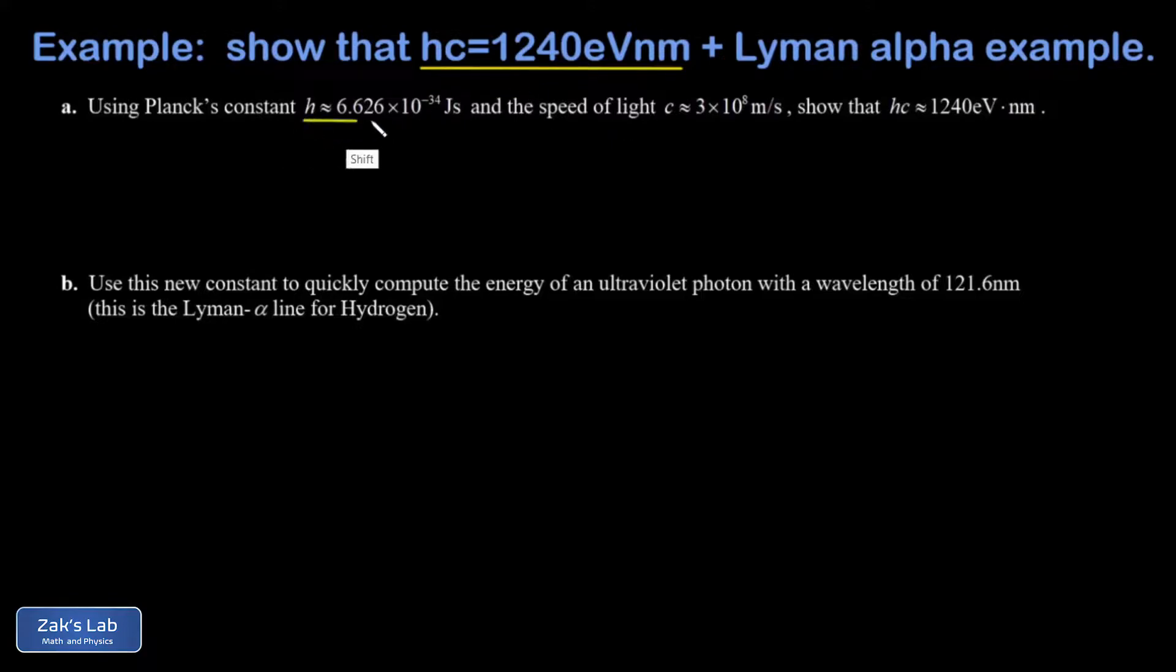So if we take the product of Planck's constant and the speed of light, these are both given as rather crude approximations, we want to show that that product can be changed into units of eV nanometers, and we get about 1240.